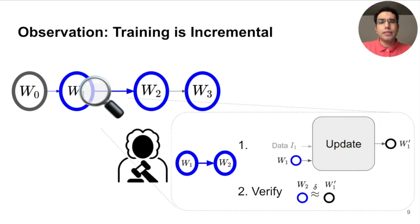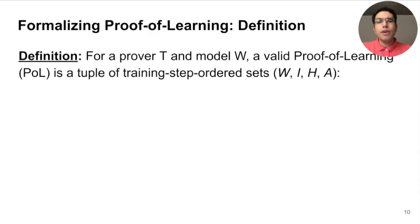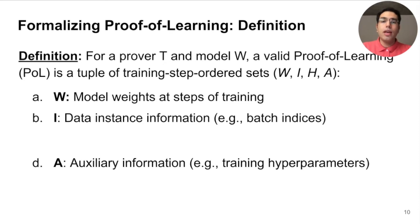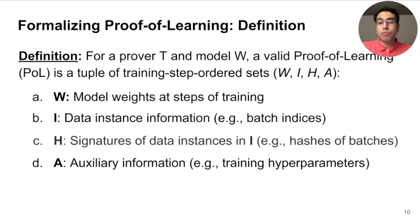We also need data and auxiliary information, such as the learning rate, used to make the updates. Therefore, these pieces of information should also appear in the proof. We define proof of learning, or POL, as the tuple WIHA, where W is the sequence of model weights, I is the set of data indices used to learn the weights, and A is the auxiliary information that is necessary for training. Note that this is enough for producing and verifying a proof of a model that is trained on a publicly available data set. If the training data is private, however, we require that the prover also provides signatures with data points used in the training as well.